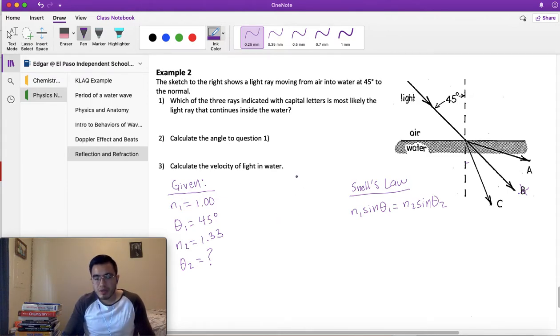Before we substitute, let's do some algebra and you'll see why. We need θ2. First step would be divide both sides by n2 because we're trying to isolate θ2. These two cancel. Our equation looks like n1 sin(θ1) divided by n2 is equal to sin(θ2).